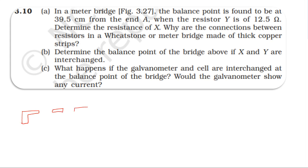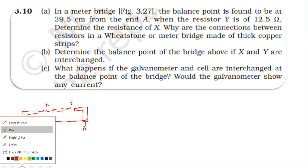From the diagram, there is a one-meter wire between A and B. In the gaps — left-gap and right-gap — the left-gap has X resistance and the right-gap has Y resistance. The galvanometer and the battery are also connected.